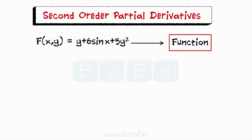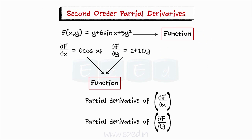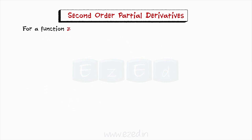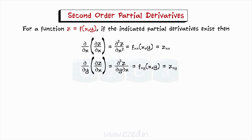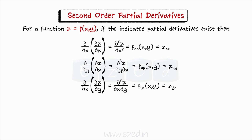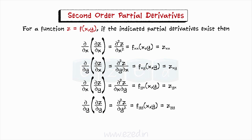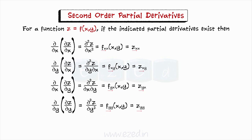The partial derivative of a function is itself a function, so it is possible to find the partial derivative of a partial derivative. We define second-order partial derivatives as follows. For a function z equals f(x, y), if the indicated partial derivatives exist, we have: del squared z by del x squared (second partial with respect to x twice), del squared z by del y squared (second partial with respect to y twice), and the mixed partial derivatives. Note that the twos are not exponents. When using the del symbol, it is read from right to left; when using subscript notation, it is read from left to right.